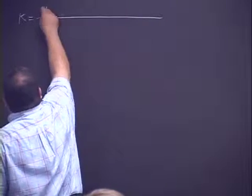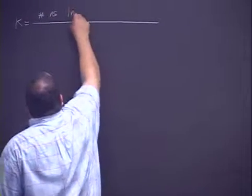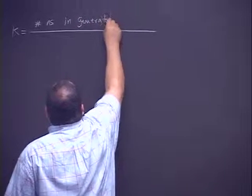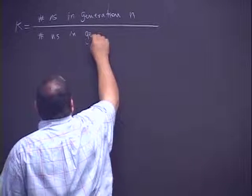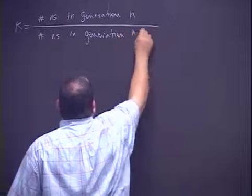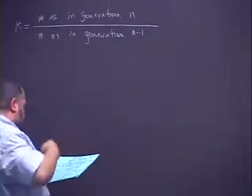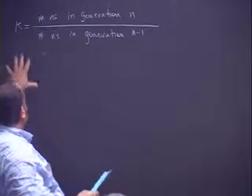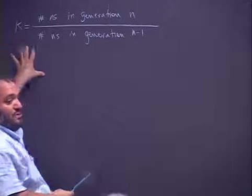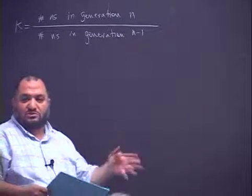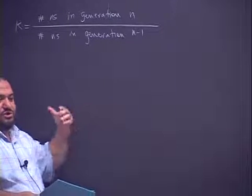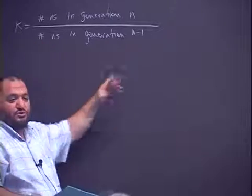Let's continue. We discussed last time what we mean by the multiplication factor — it is the total number of neutrons in generation N divided by the number of neutrons in generation N minus 1, which is the previous generation. In order to calculate K in terms of the physical parameters of the nuclear reactor, such as fuel concentration and cross sections, we will look for what constitutes the different components of the multiplication factor.